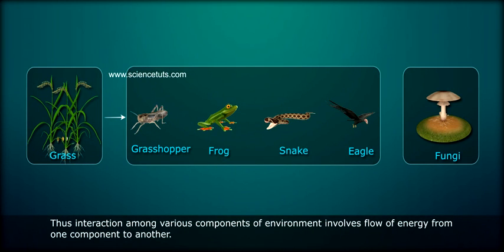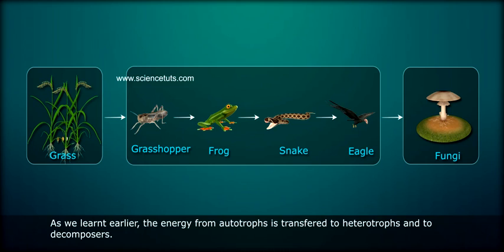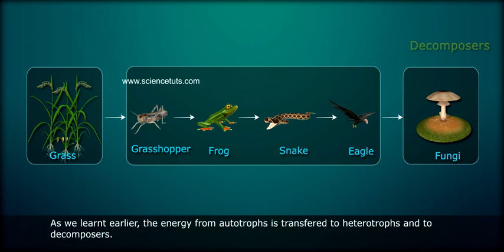Thus, interaction among various components of the environment involves flow of energy from one component to another. As we learned earlier, the energy from autotrophs is transferred to heterotrophs and to decomposers.